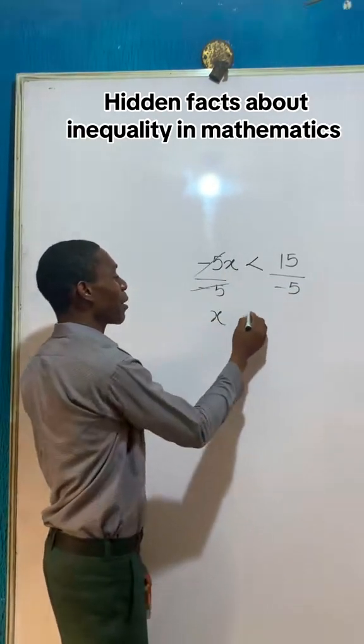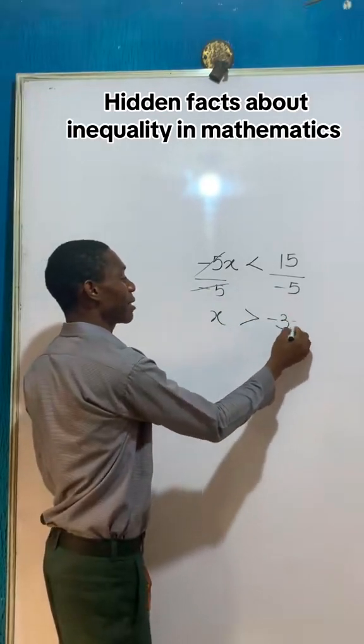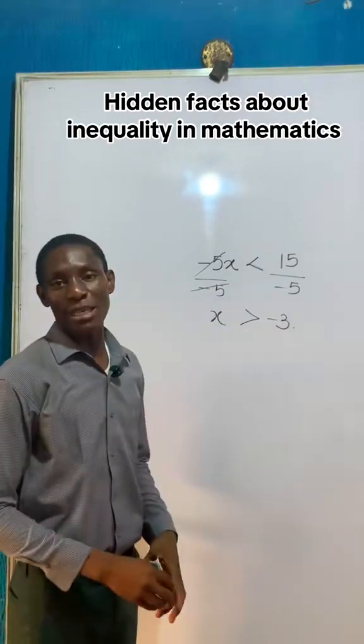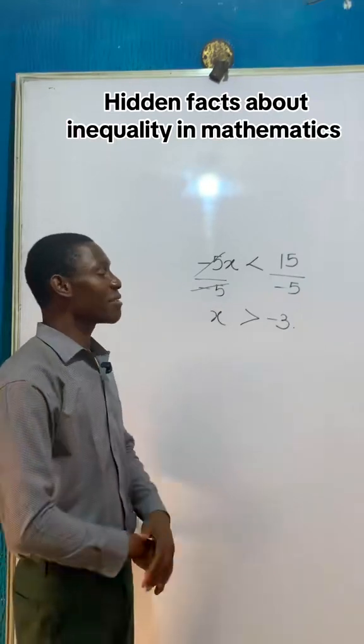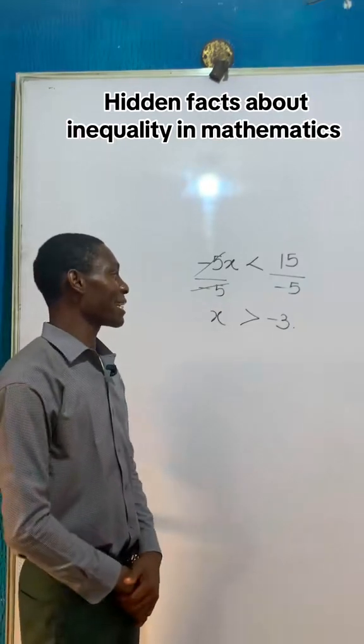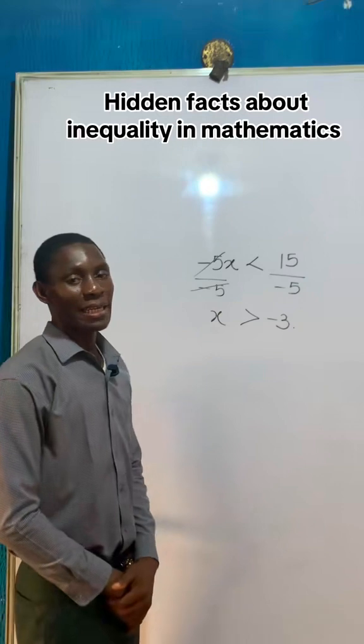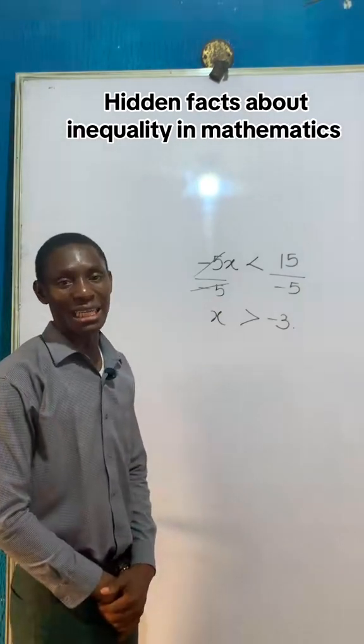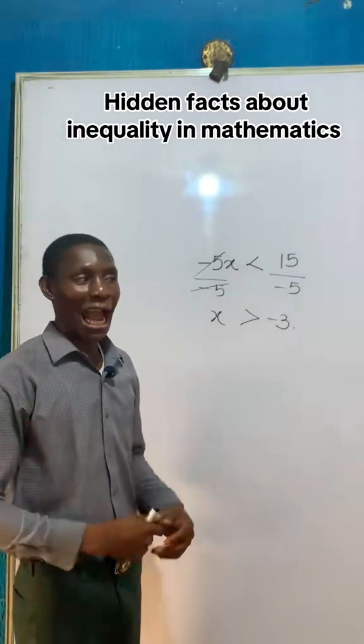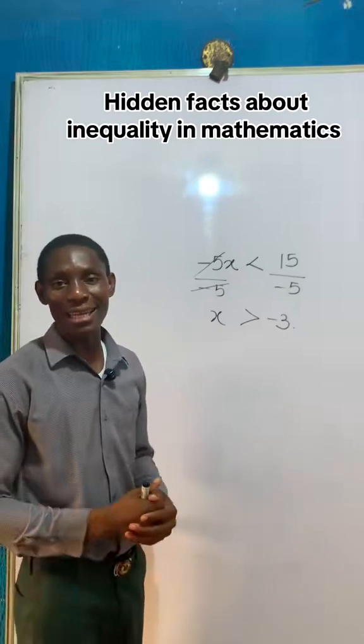So my x becomes greater than minus 3, and then I told my students that whenever you divide an inequality by a negative value, the inequality will change. If it was less than, it becomes greater than, and if it was greater than, it will become less than.